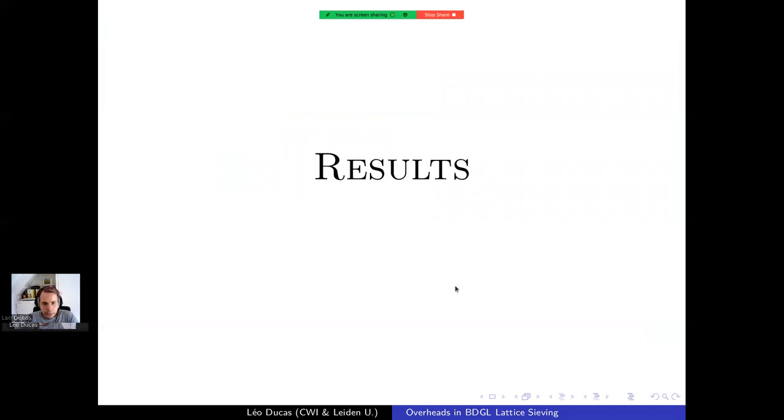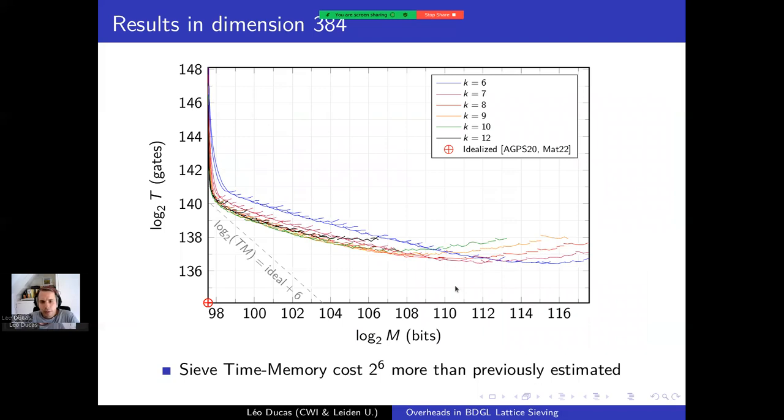So here is the plot for dimension 384. The origin of this plot is the idealized estimation made in previous papers. So namely, this would cost about 2^98 bits of memory and 2^134 gates. And it turns out that for the same memory, you need six more bits, 2^6 more gates to actually solve it. And you can play with the time memory trade-off. But again, in the time memory metric, this is going to cost six more bits than previously estimated.